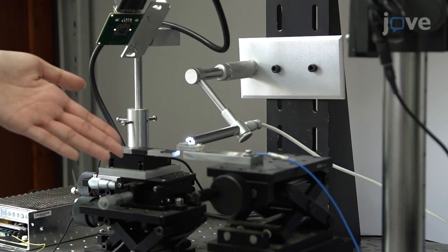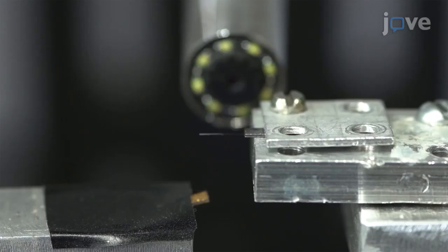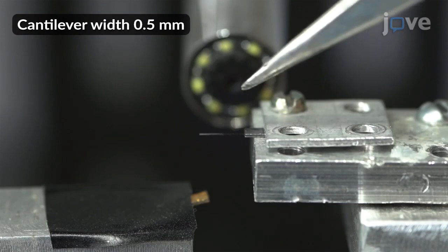The 5mm long cantilever is mounted at the end of a holder. A high-speed camera is in place with a line of sight perpendicular to the cantilever.